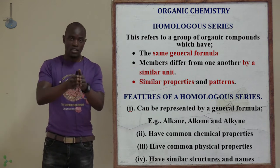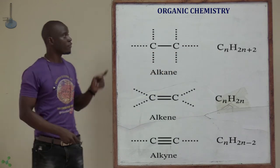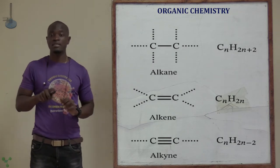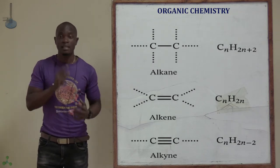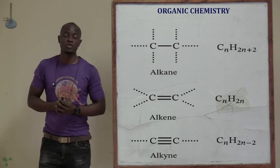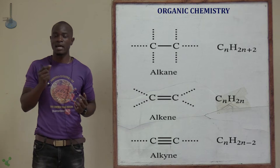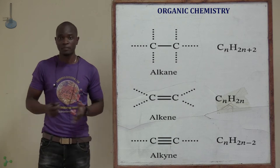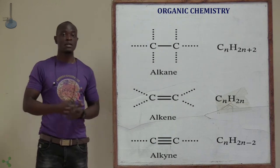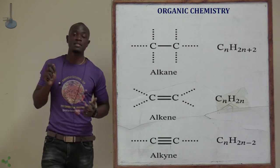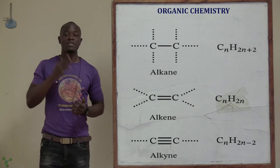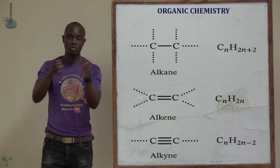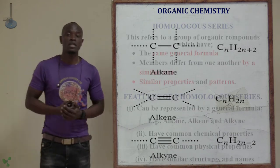If the members of the organic family, they have the same general formula. For example, the families are alkanes, alkenes, and alkynes. For the alkanes, the general formula is CnH2n+2 — that is the general formula for all the alkanes, where N is the number of carbon atoms. For the alkenes, the general formula is CnH2n, and for the alkynes, CnH2n minus 2.